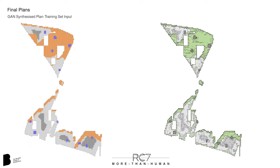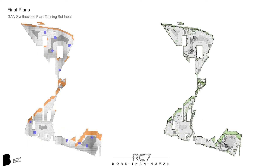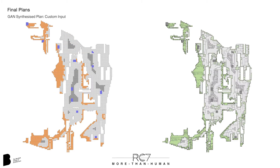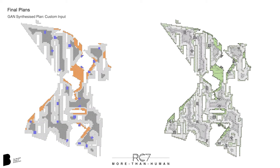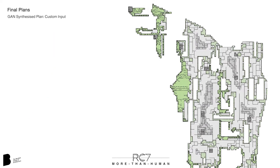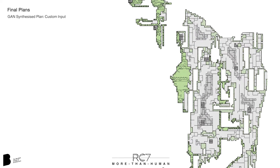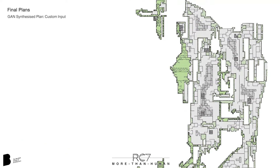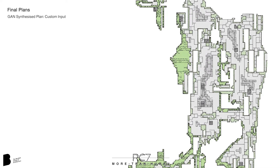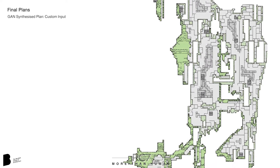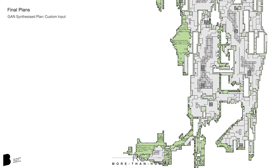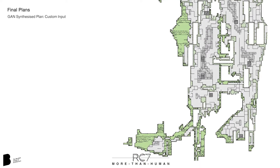When tested with new input images, the PIX2PIX GAN is able to produce a new plan that closely resembles the procedural dataset, successfully learning the meaning of the color-coded input and distributing spaces accordingly.